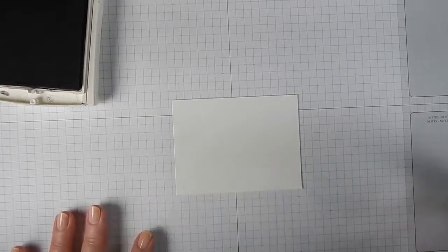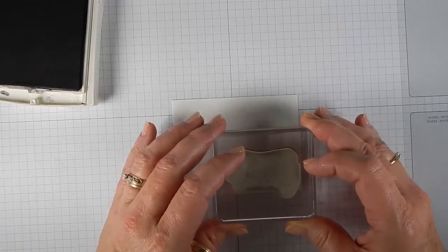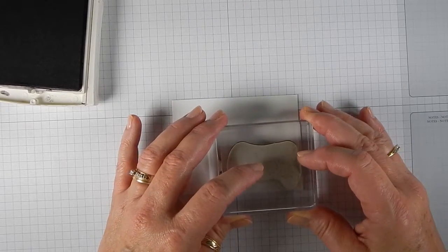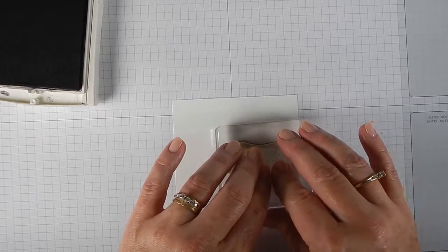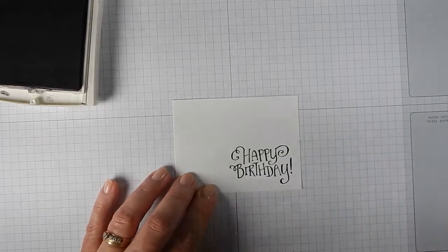The nice thing about our grid paper that we sell is you can line your paper up and know exactly where you can stamp at and make it straight. So you want to push your stamp down and bring it straight up.